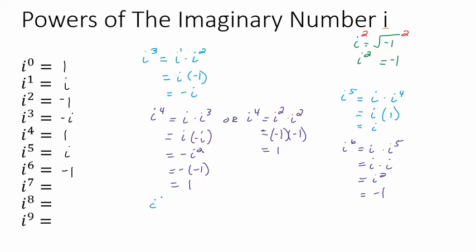For i to the seventh, you could do i to the third times i to the fourth, or i times i to the sixth. We just figured out i to the sixth is negative 1, so i times negative 1 gives negative i. If we did i to the third times i to the fourth: i to the third is negative i, and i to the fourth is 1, so that also gives negative i. Either way works.